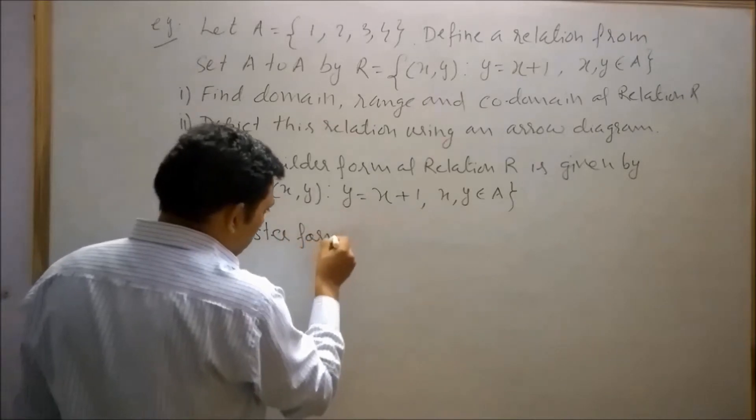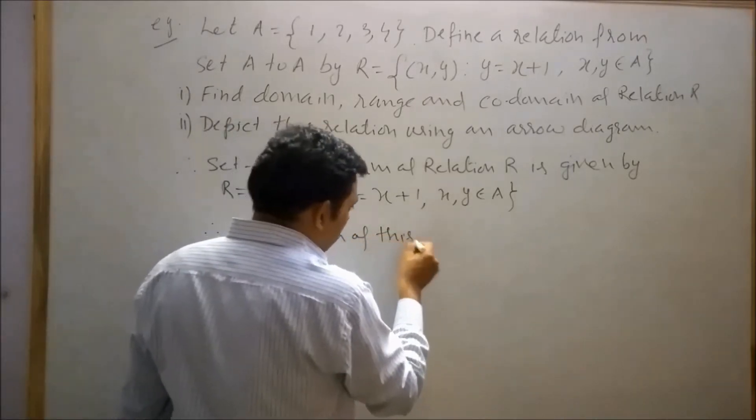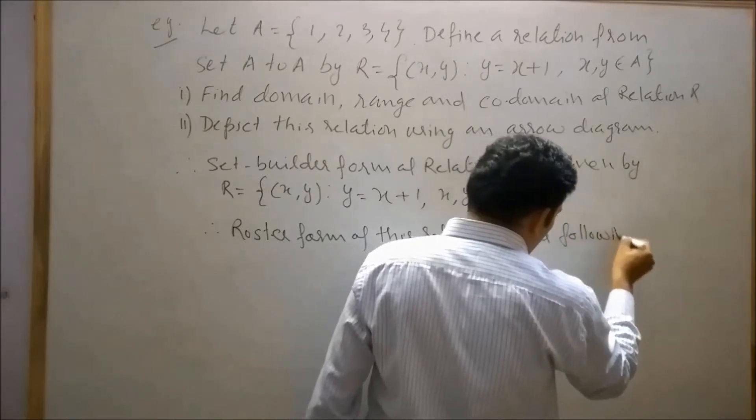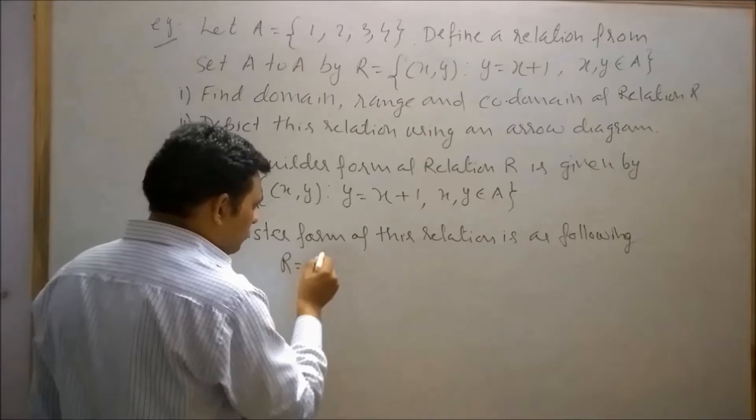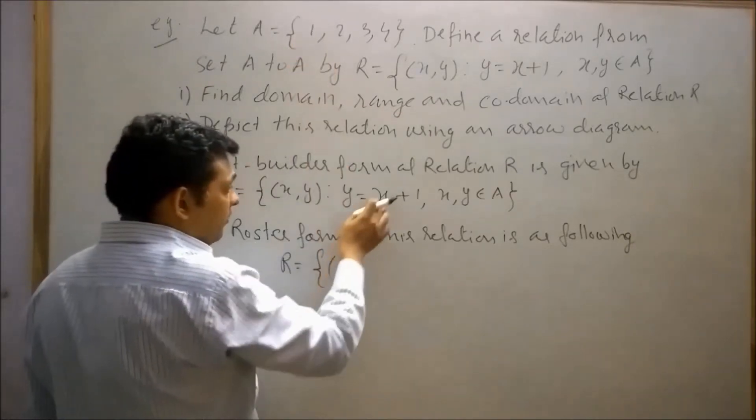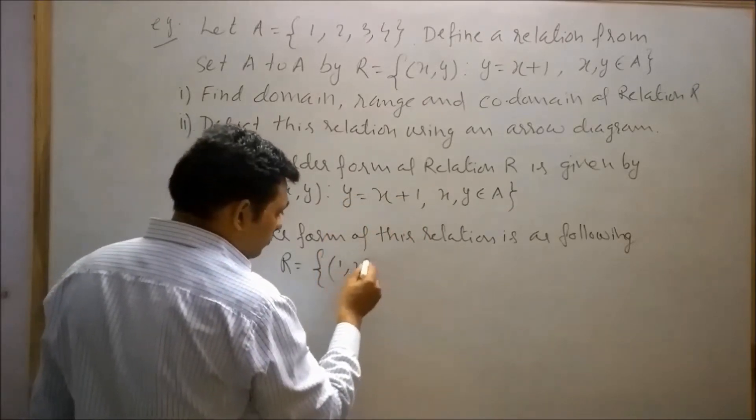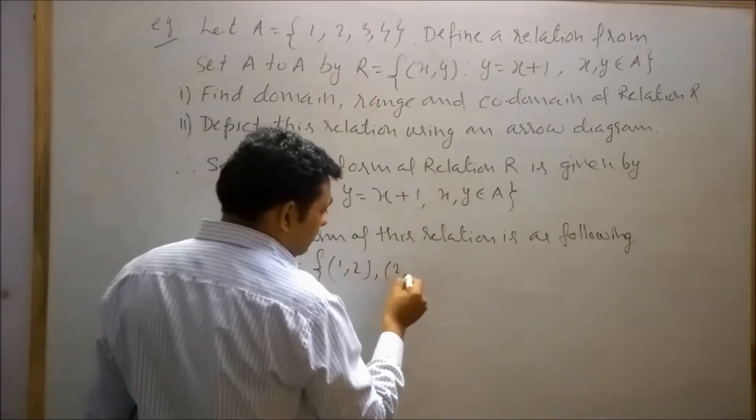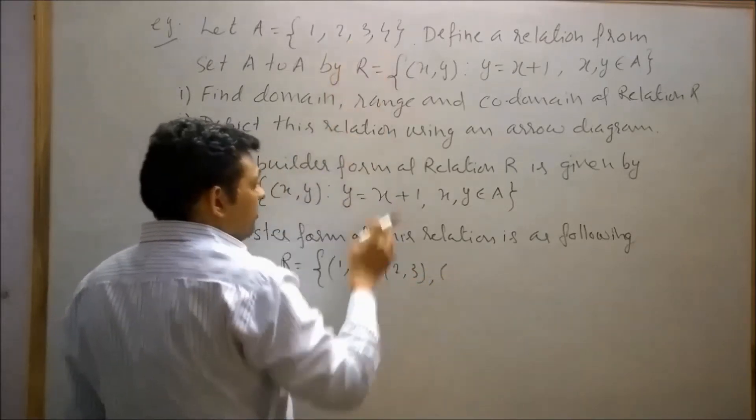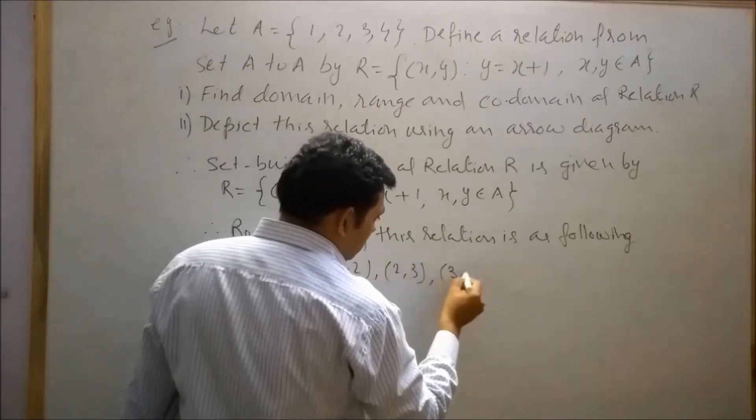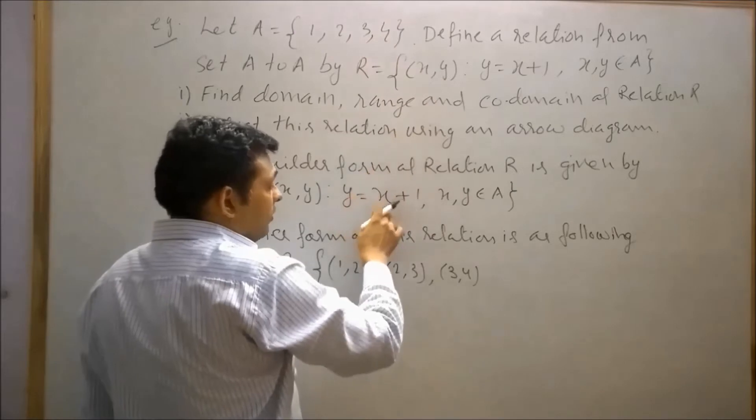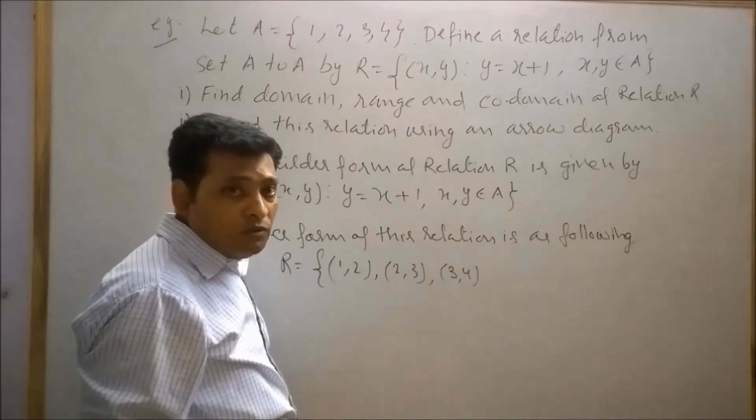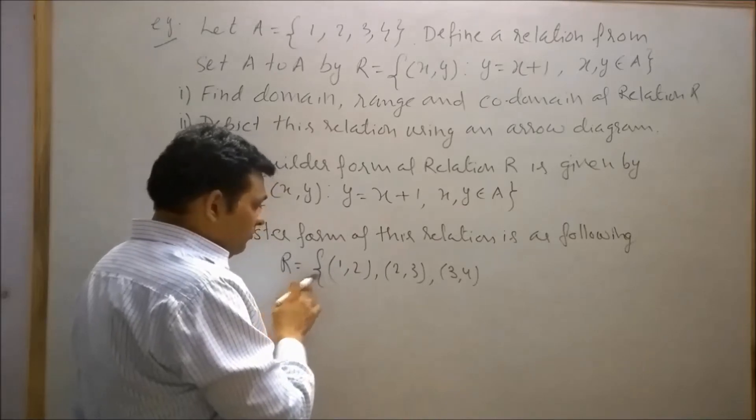When x equals to 1, then y will equal to 1 plus 1 is 2, so (1,2). When x equals to 2, 2 plus 1 is 3, so (2,3). When x equals to 3, then y will equal to 3 plus 1 is 4, so (3,4). When x equals to 4, then y will equal to 4 plus 1 is 5, but 5 does not belong to set A, so (4,5) ordered pair does not belong to the relation. So the relation R will be (1,2), (2,3), (3,4).